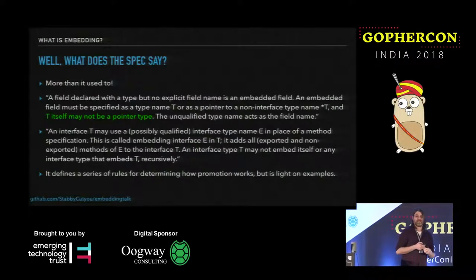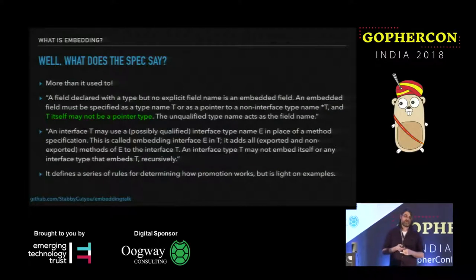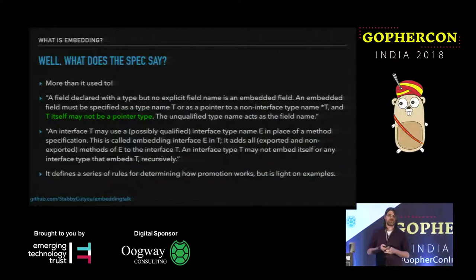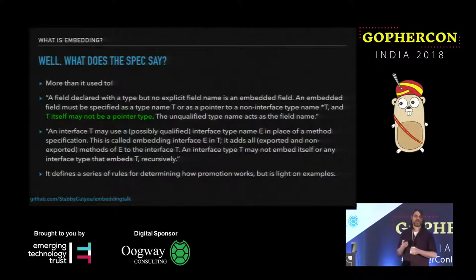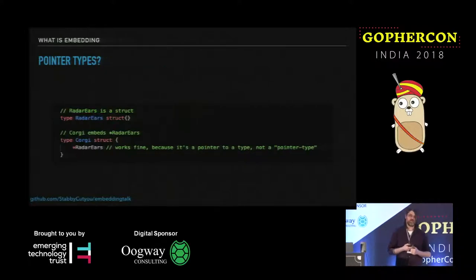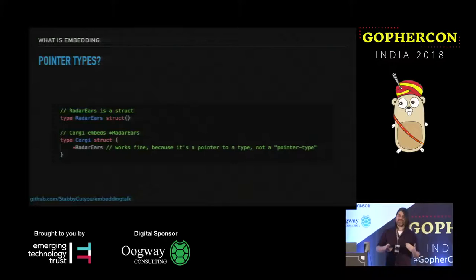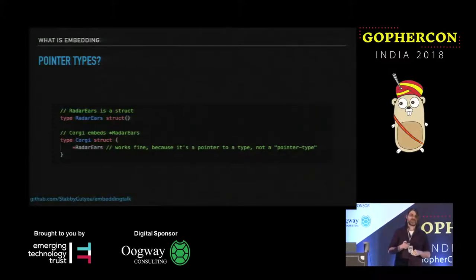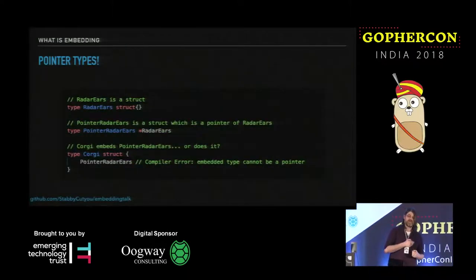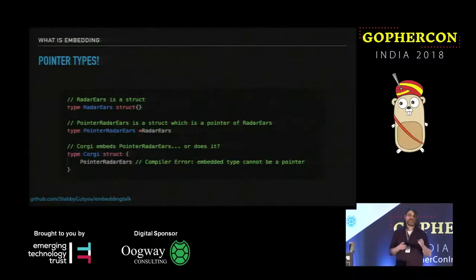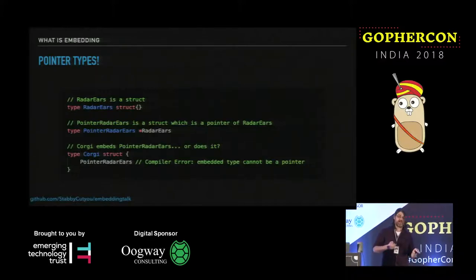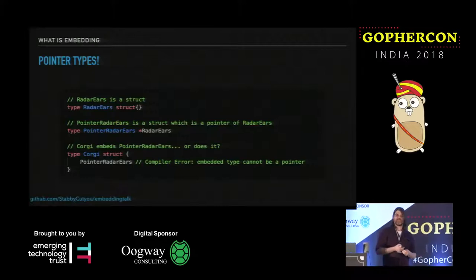The spec also defines a series of rules for how promotion works. In a lot of ways it's a little light on examples, and if you look up examples online you'll see a lot around embedding readers and writers — interesting, but a little basic. So what is a pointer type? You can embed a radar ear struct or a pointer to that struct inside a corgi — that works fine because it's a pointer to a type, not a pointer type. However, if you take that radar ear struct and make another type that is itself a pointer to a radar ear struct, you can no longer embed that, and the compiler gives a pretty clear error: 'embedded type cannot be a pointer.'